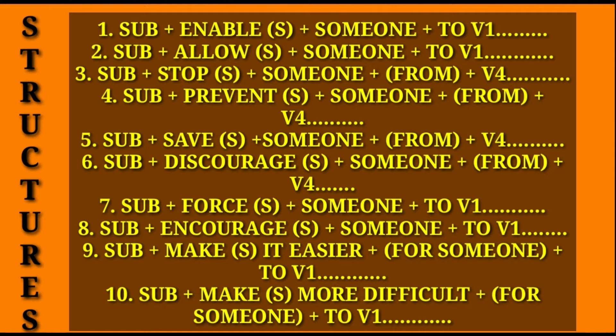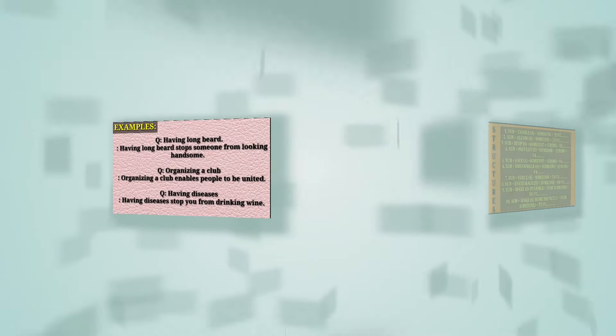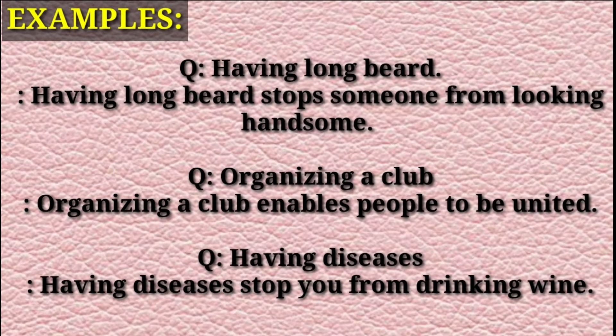Number 9 — Subject + make/makes it easier + for someone + to-V1 + remaining part. Number 10 — Subject + make/makes it more difficult + for someone + to-V1 + remaining part. In this subtopic, you have to read your question very carefully and then select a suitable structure for your answer. The verbs in these structures must be changed according to the tense of the question — if your question is in past tense, you'll have to write the verb in past tense in your answer.